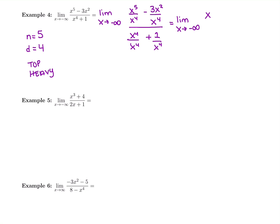In the next term, we have minus 3x squared over x to the fourth. That's going to go to 0 when x is going to negative infinity — not enough to go around, so that term goes away. Bottom-heavy goes to 0. x to the fourth divided by x to the fourth is 1. And 1 over x to the fourth also goes to 0. So we end up with x divided by 1, and we plug in negative infinity. Negative infinity divided by 1 — our final answer is negative infinity.